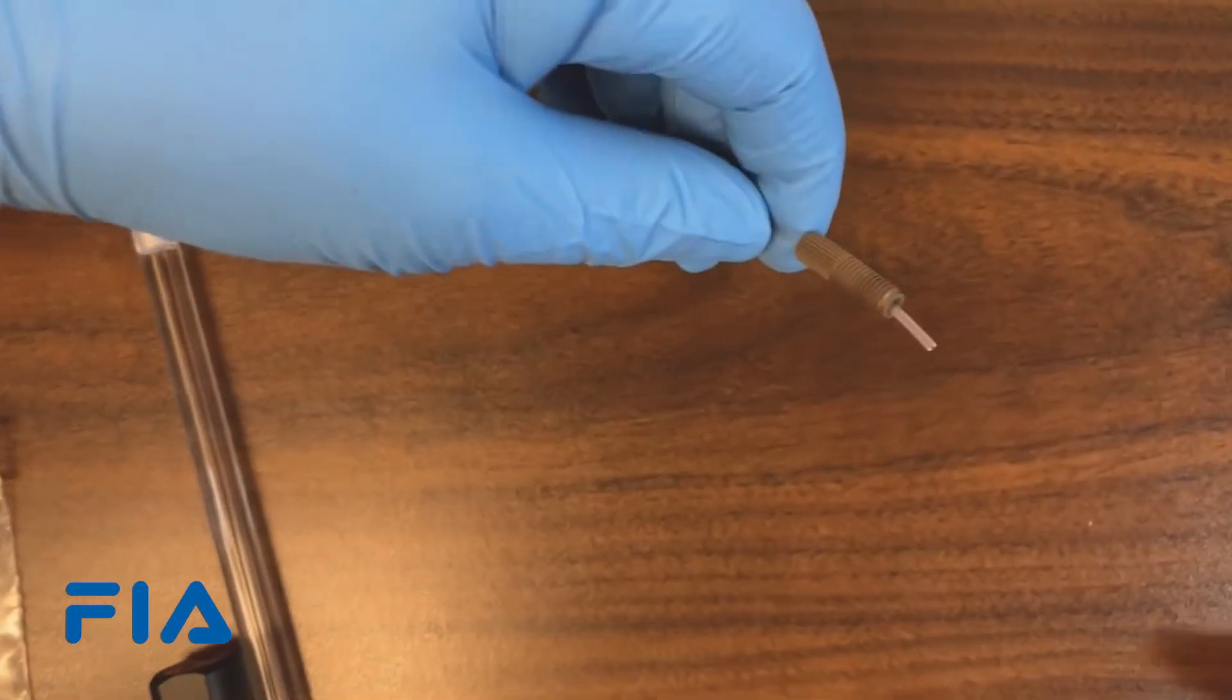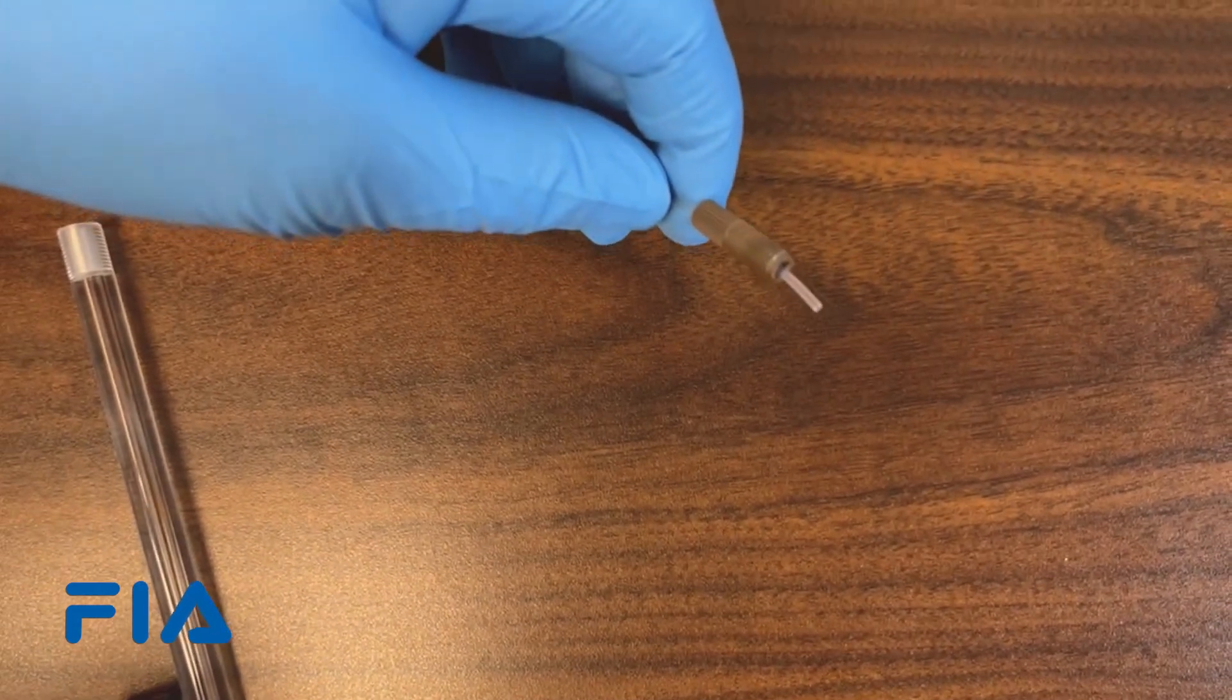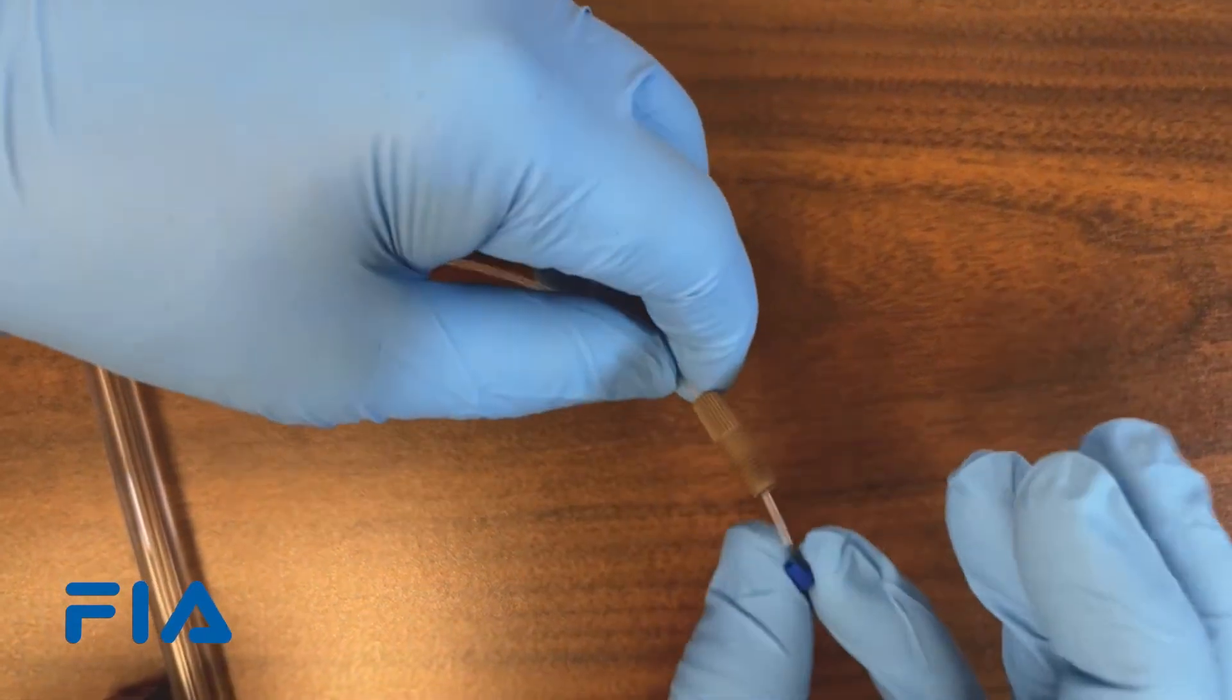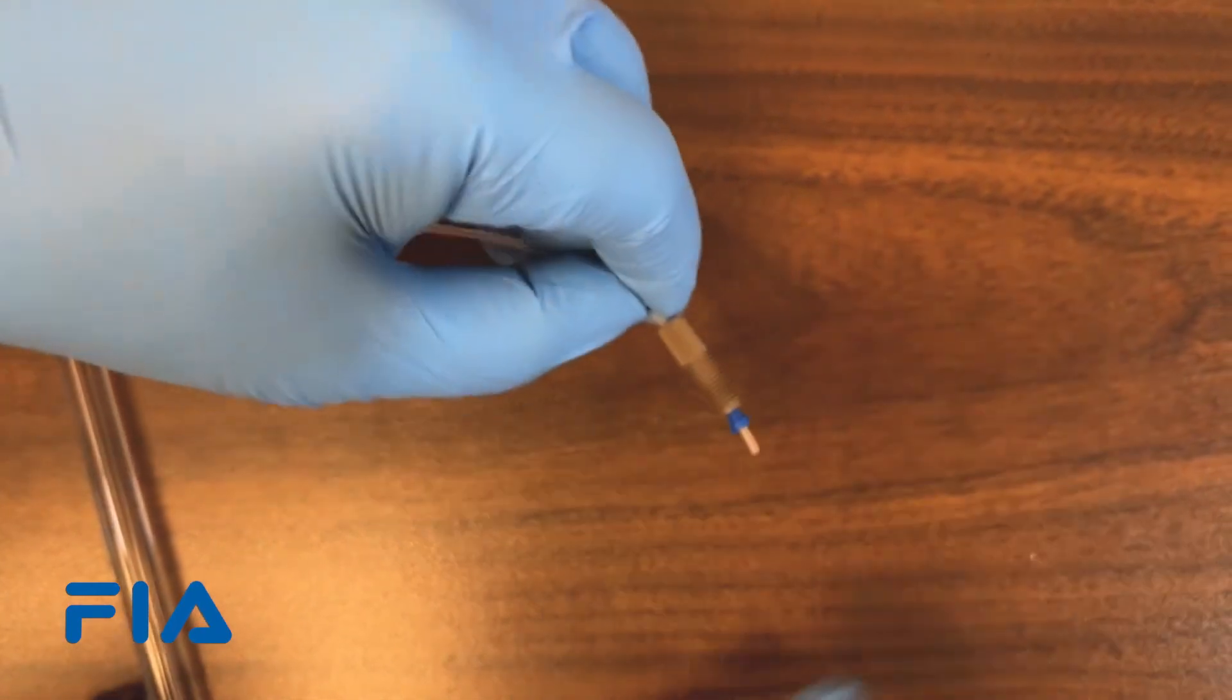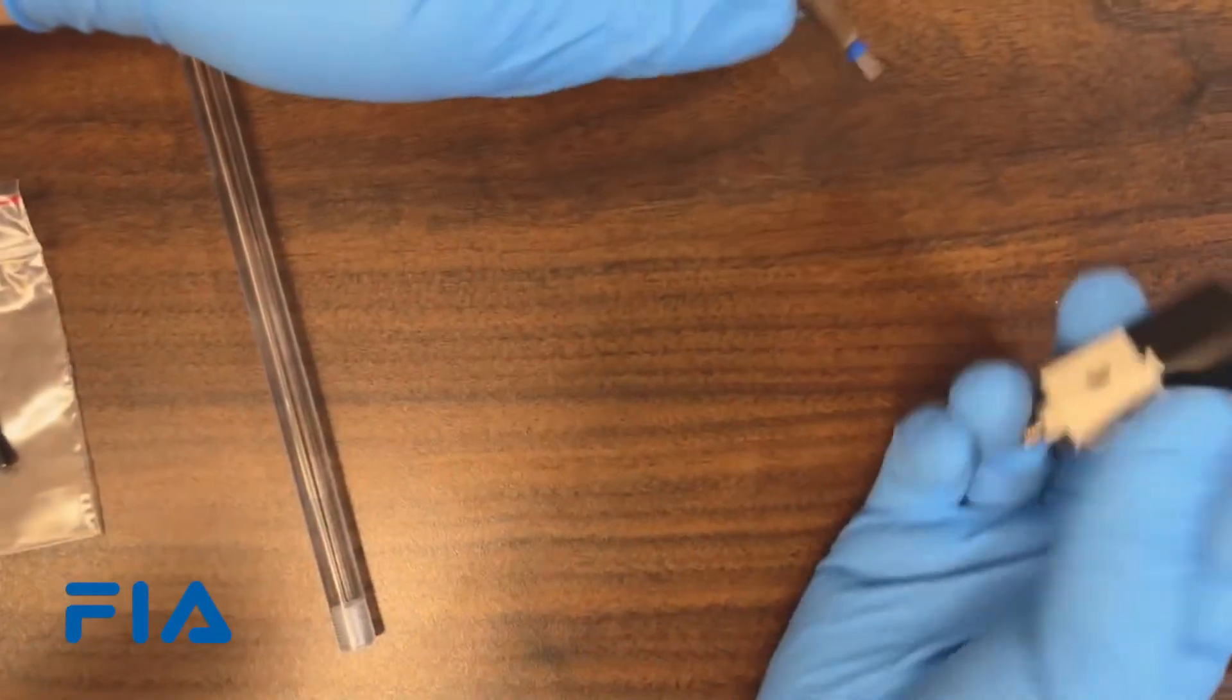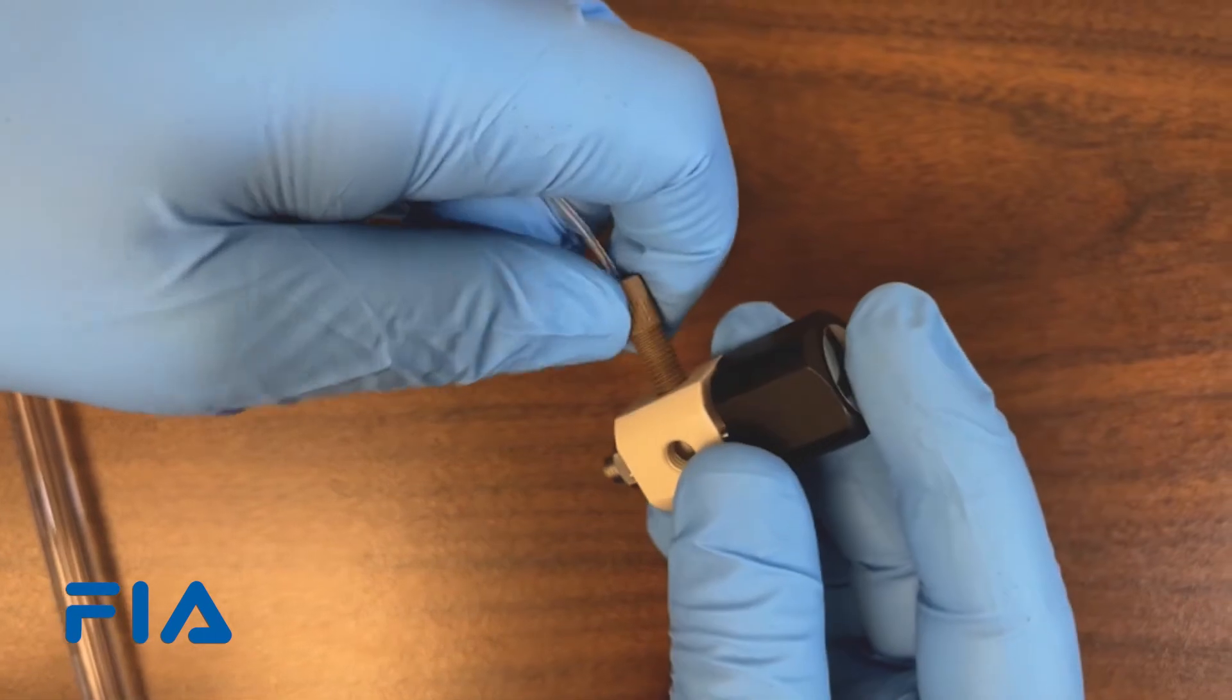Onto one end of the tubing, slide a nut and then ferrule on, and screw this into one of the open ports on the Latchet switching valve. Screw it down solidly, finger tight, but don't over tighten.